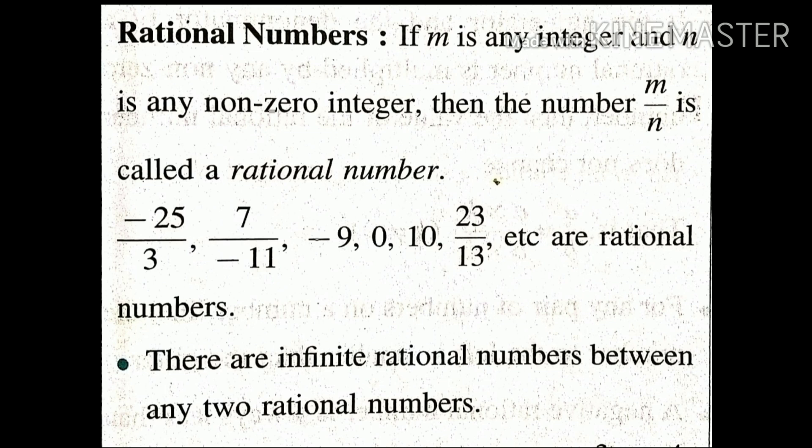Next example is 0. 0 is also a rational number because 0 upon 1 equals 0. Because 0 divided by 1, you will get 0.